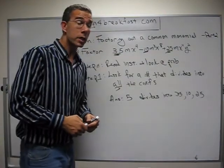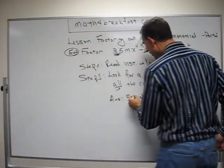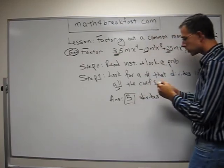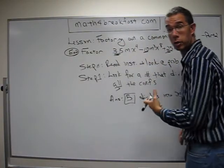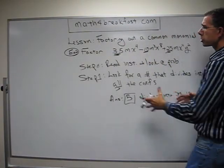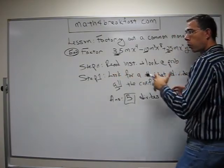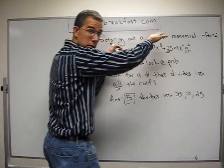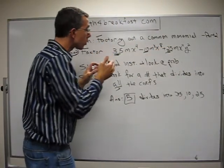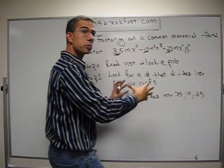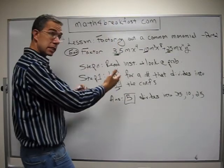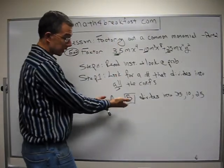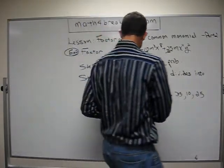Coefficients are the numbers that are in front of each clump or term. This term here has a 35 in the front. This one here has a 10 in the front. And this one here has a 25 in the front. So that means the 35, the 10, and the 25, those are the coefficients. And the answer to this: 5 divides into the 35, the 10, and the 25. It's the biggest number that would divide into all of them.